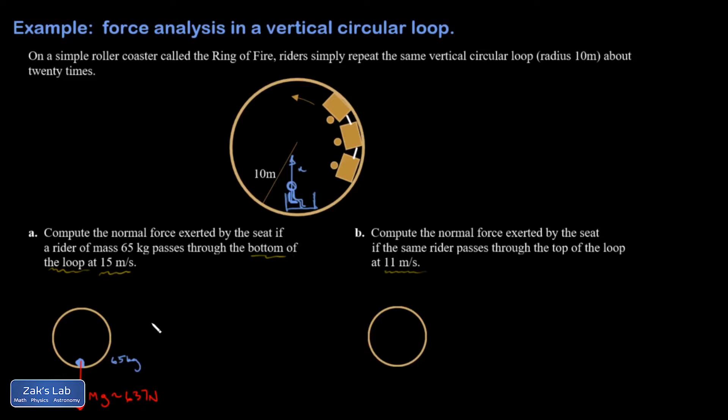And I want to clarify something real quick. In order to move on a circular path, the acceleration must always point towards the center of curvature. So I know it points up at this point, which means the net force must point up, which means the upward normal force must exceed the downward force of gravity. And that's the thing we're trying to compute.